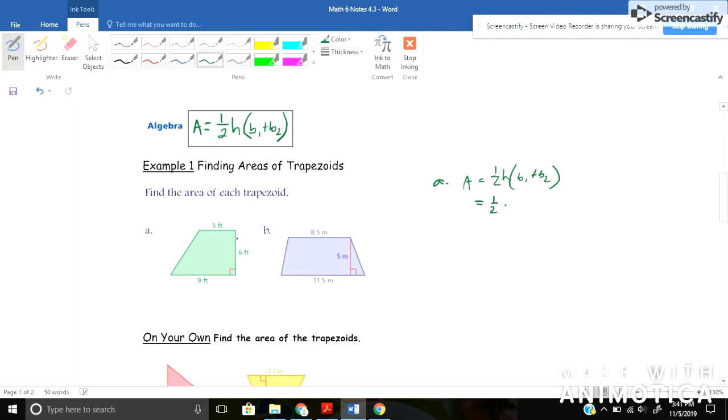All right, so half times my height, how tall is this trapezoid? It's six feet tall, times my bases added together, base one I can call five plus base two nine, plus five or five plus nine doesn't matter there. And when I go ahead and do all this math it'll give me my area.